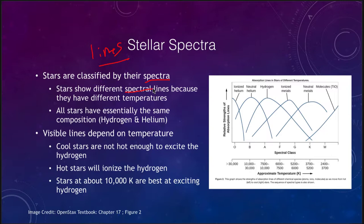The reason that stars show different spectral lines has nothing to do with their composition. Their compositions are all essentially the same — they are primarily hydrogen and helium. All stars are made primarily of hydrogen and helium, but the differences in spectral lines have to do with the stars' temperatures. The lines that are visible do depend on the temperature.